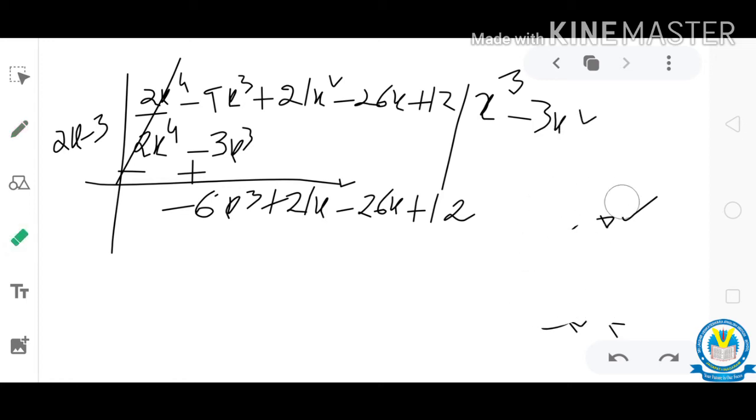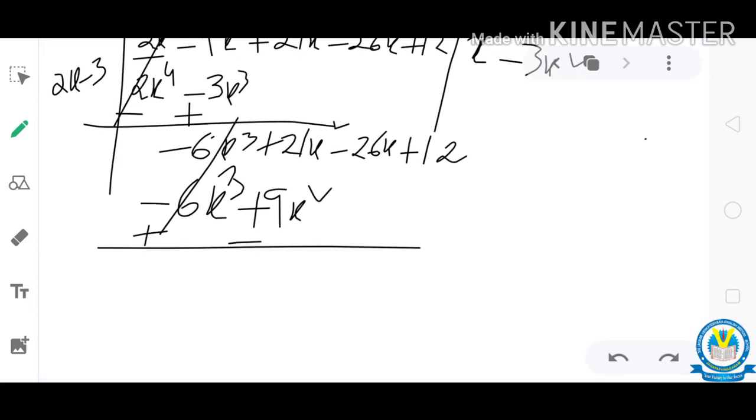Divide with 2x minus 3. So 2x into 3x square. 2 into 3, 6. Minus into plus, minus. X into x square, x cube. Minus into minus, plus. 3 into 3, 9, x square. Signs will change. Both are cancelled. Positive 21x square, negative 9x square. So remaining 12x square. Positive 12x square minus 26x plus 12.